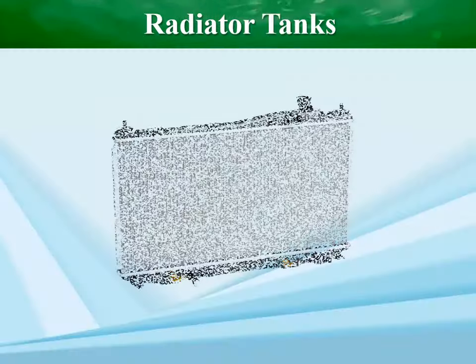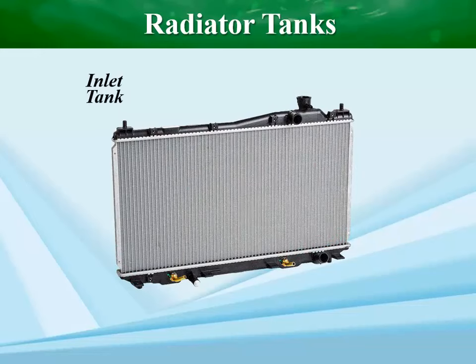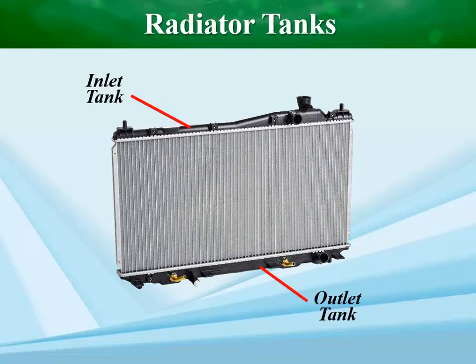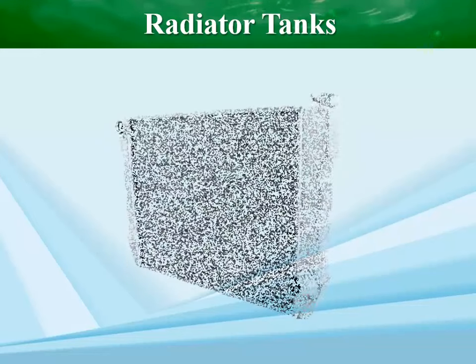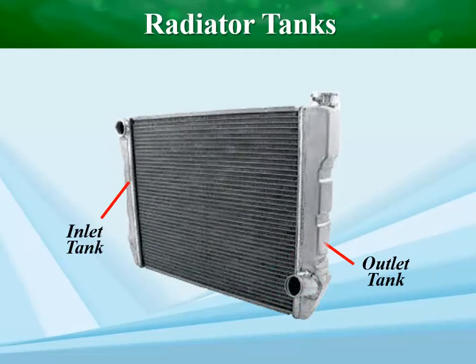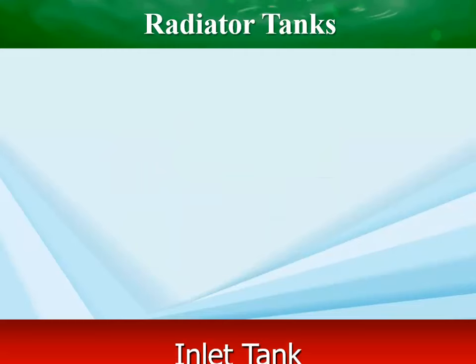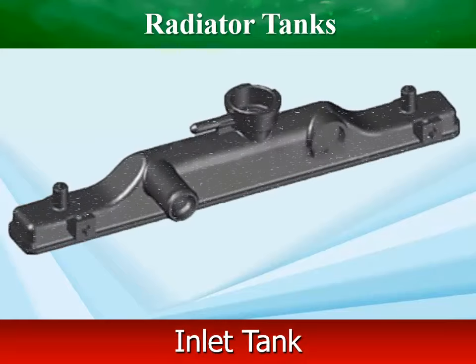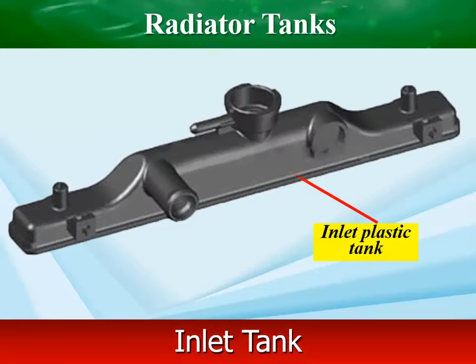The radiator consists of two storage plastic or aluminum headers, often called tanks, attached to the core's sides or top and bottom. The inlet tank holds the hot coolant, and the outlet tank holds the cooled coolant.